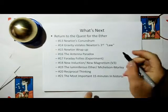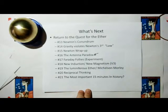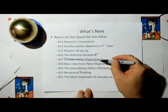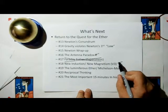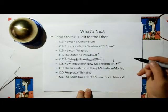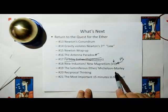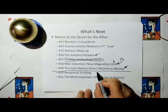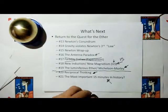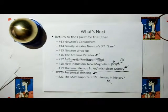So what's next? Next we're going to do Newton's conundrum — three videos on Newton. Then we'll have an antenna paradox video for antenna engineers. Faraday's Folly is going to be cancelled — I don't need to go back and disprove Faraday's law, so I'm going to skip that. Coming up is an introduction to new induction and new magnetism in the V3 models, and a newer version of new electromagnetism, V5. Then video 19 is an introduction to the Luminiferous Ether and Michelson-Morley, discussing what the old model of the ether was that this new ethereal mechanics is replacing. And video 20, the reciprocal thinking — this is the most important 15 minutes in history, in my opinion, as we're going to show a property of matter that we humans have gotten completely wrong about.